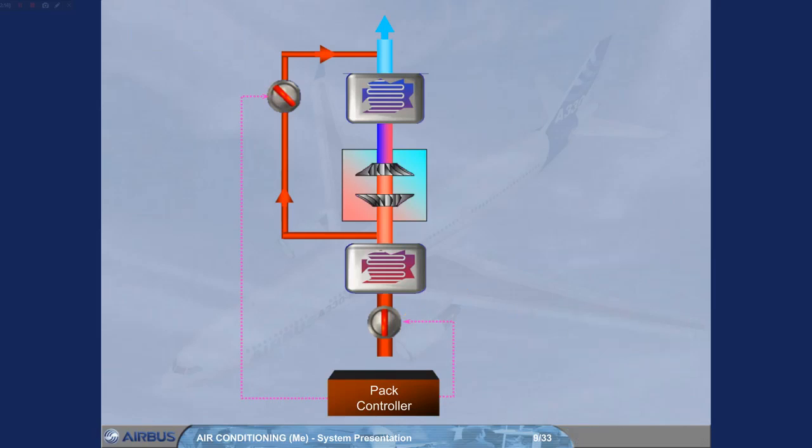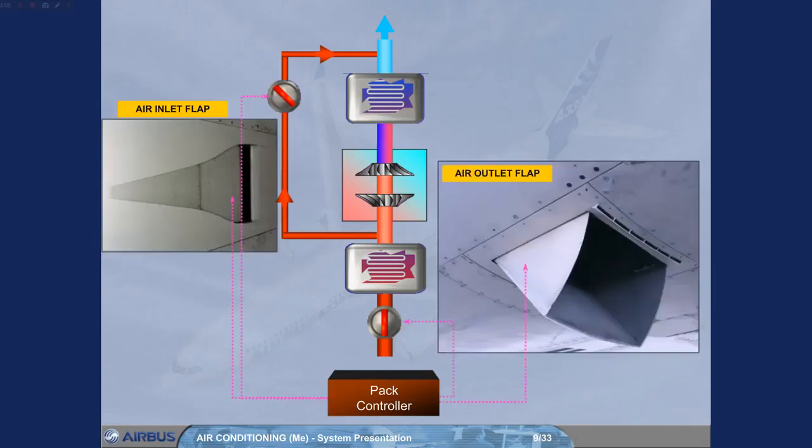The pack controller also controls the ram air inlet and outlet flaps to adjust the amount of air blowing through the heat exchangers.